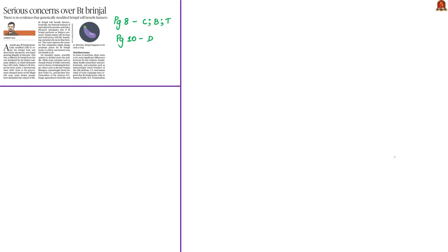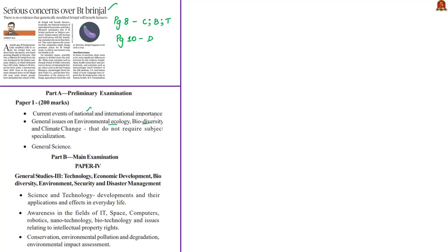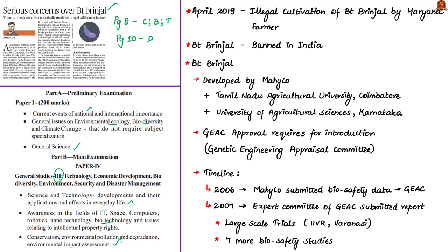This article is about an editorial discussing serious concerns of BT Brinjal. This discussion will be relevant in the prelims syllabus under current events of national importance, general issues on environmental ecology and biodiversity, and general science. It can also be linked to your mains General Studies Paper 3 under science and technology developments, awareness in the field of biotechnology, and conservation and environmental impact assessment. In April 2019, it was found that a farmer in Haryana was illegally growing the BT Brinjal crop, which is a genetically modified brinjal whose cultivation has been banned in India.